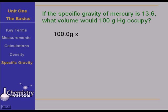We start with 100 grams of mercury. And we know that 1 milliliter of mercury weighs 13.6 grams. How do we know that? We know that because the density of water is 1 gram per milliliter. The specific gravity of mercury is 13.6, so the density of mercury is 13.6 grams per milliliter.